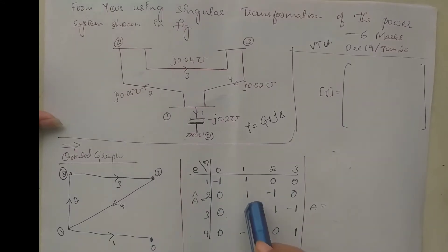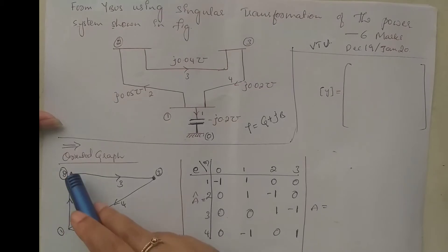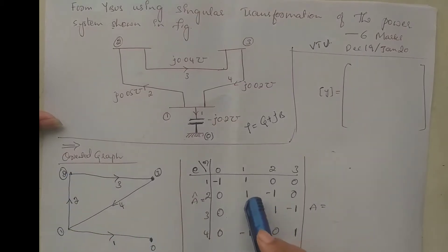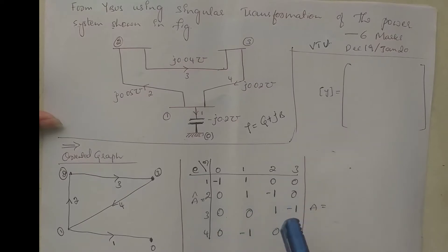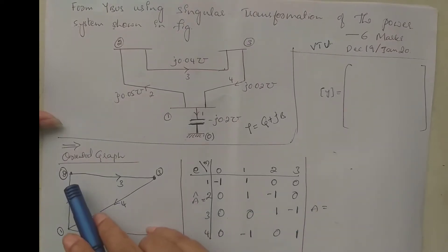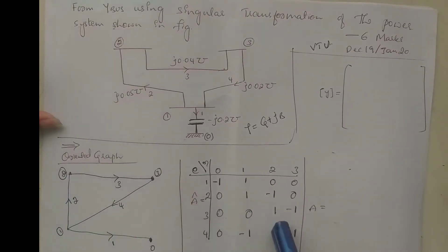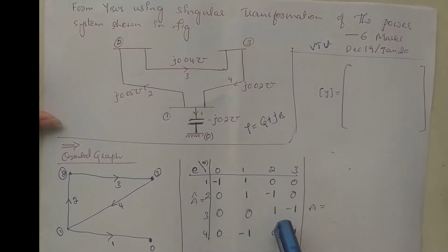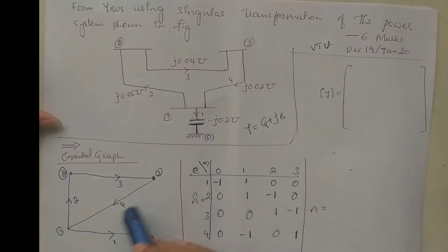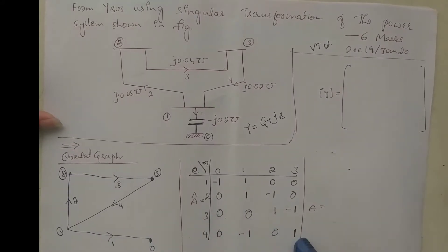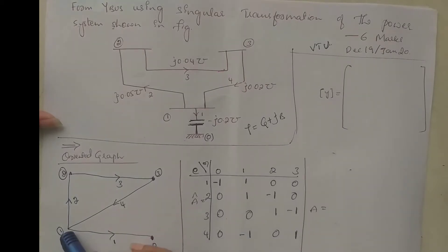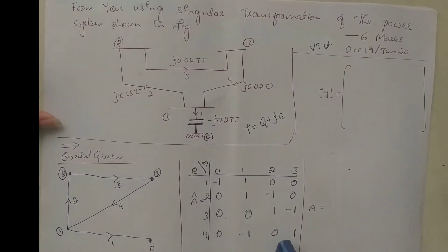Second element is between 1 and 2, away from 1 (+1), towards 2 (-1): row 0, 1, -1, 0. Third element between 2 and 3, away from 2, towards 3: row 0, 0, 1, -1. Fourth element between 1 and 3, away from 3, towards 1: row 0, -1, 0, 1.